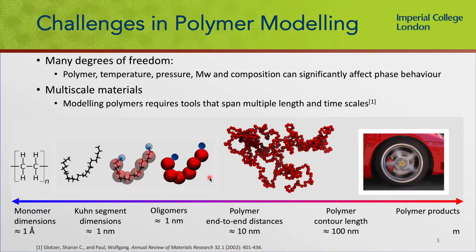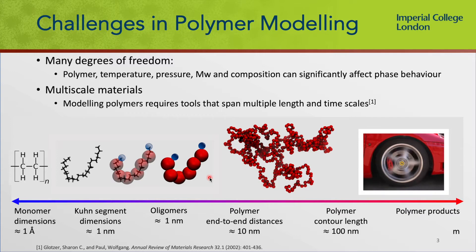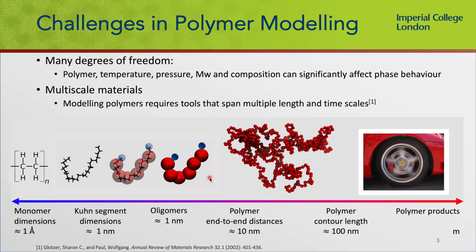So there are particular challenges in polymer modeling. For example, the fact that there are many different degrees of freedom that affect the properties of the system under study — for example, the temperature, pressure, molecular weight, the polydispersity, the composition of polymers can all affect the phase behavior. Moreover, polymers are multiscale materials, which makes them inherently challenging to model because there is a wide range of scales one can be focusing on.